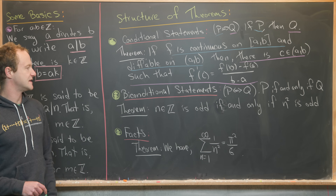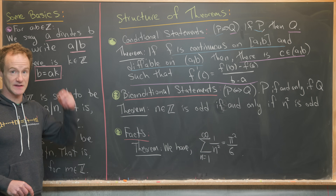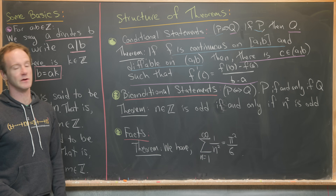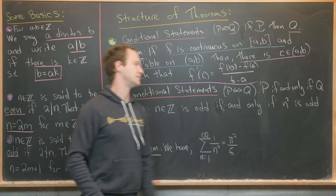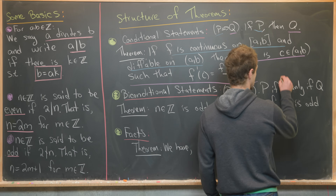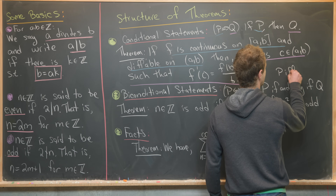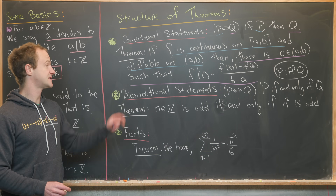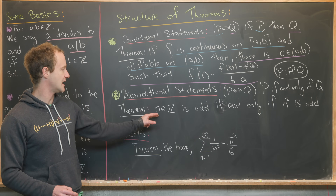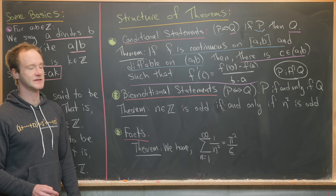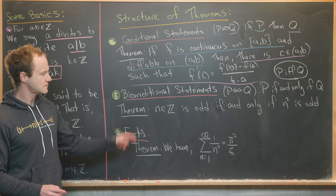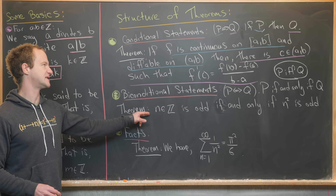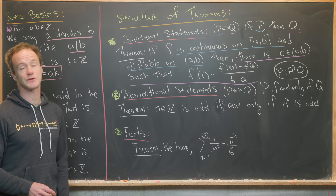We also have biconditional statements — these are 'if and only if' statements. We read this as P if and only if Q, sometimes shortened to P iff Q. Here's a simple biconditional: n (an integer) is odd if and only if n squared is odd. I'll let you think about what plays the role of P and Q here.